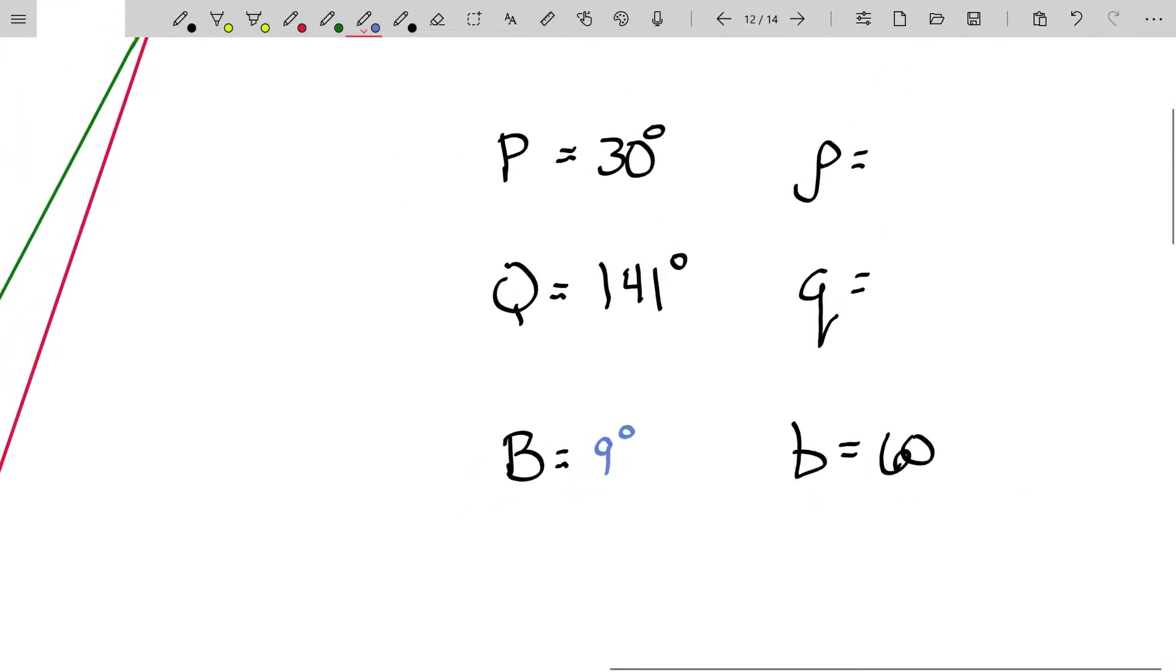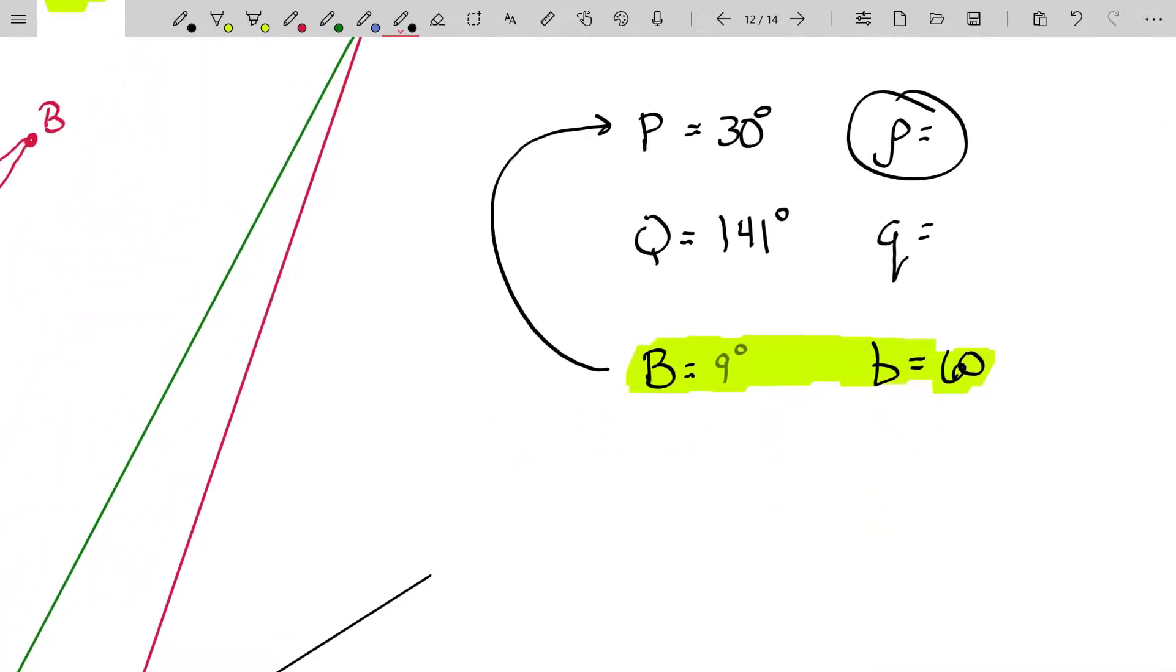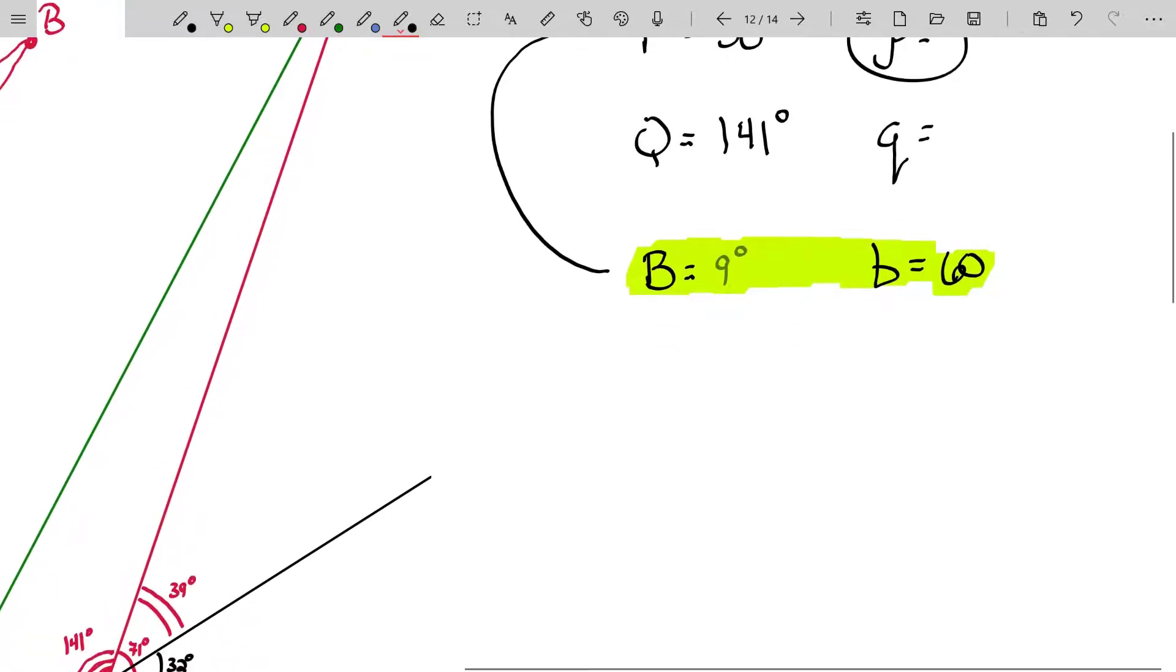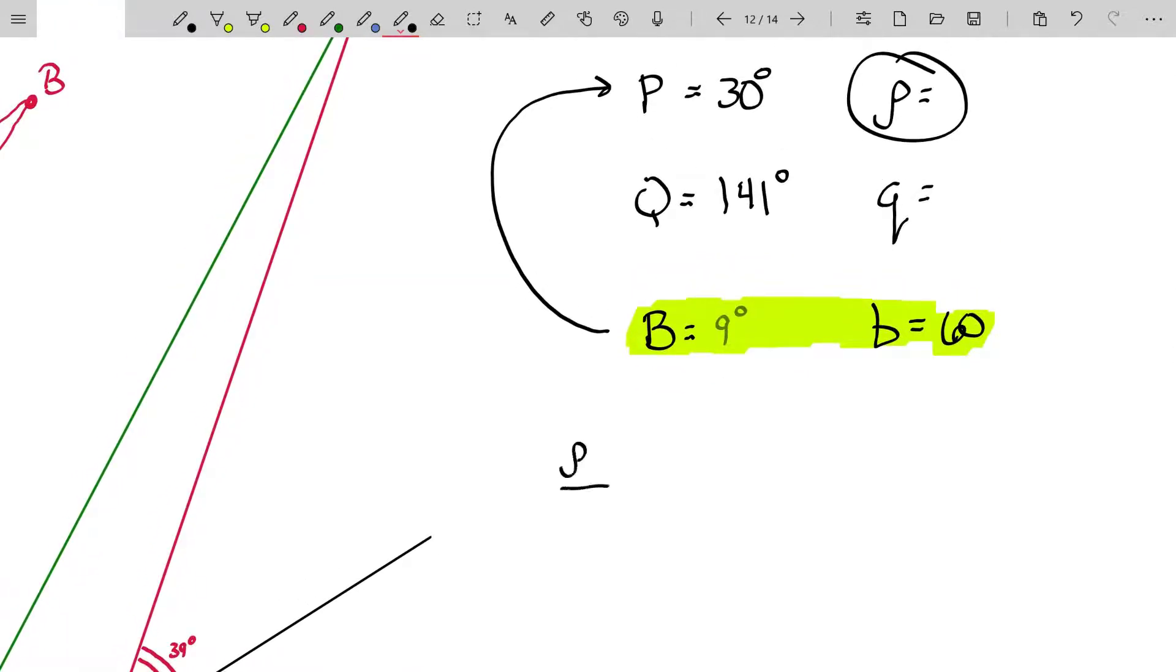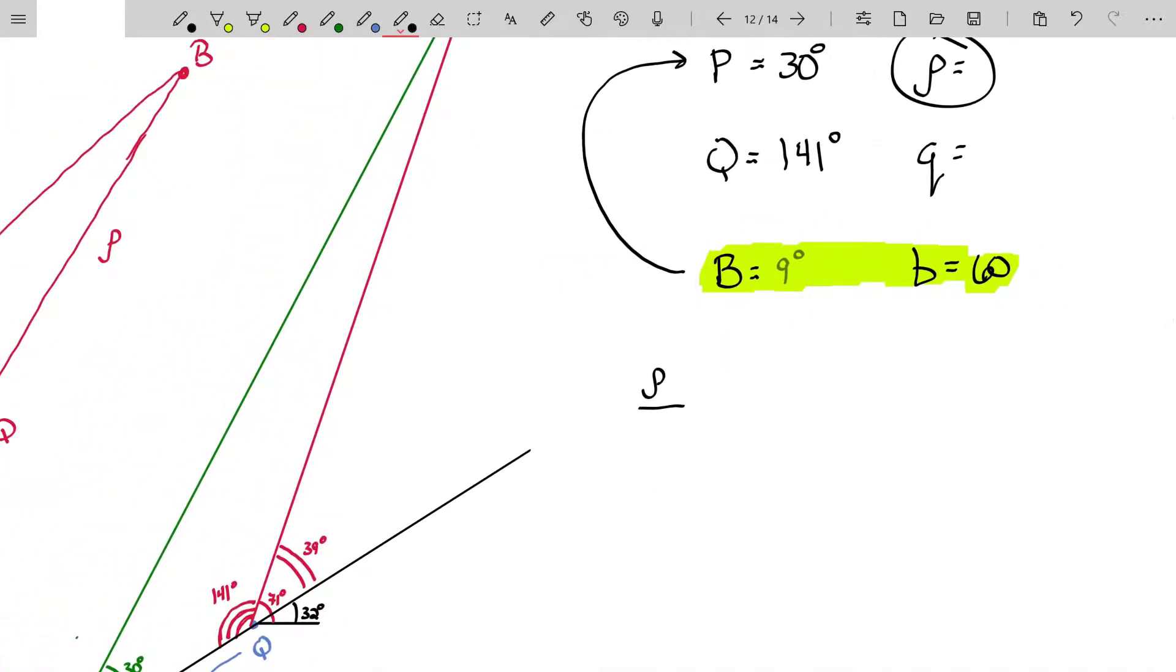I just said we don't care about angle B, but we actually do. Because we don't have a complete row here. And to use the law of sines, you need a complete row. But you can take 180 and subtract off 171, which is a sum of 141 and 30, to find out that our missing angle for B is 9 degrees. And now that I have a full complete row, I'll use that row to find our missing side length P.